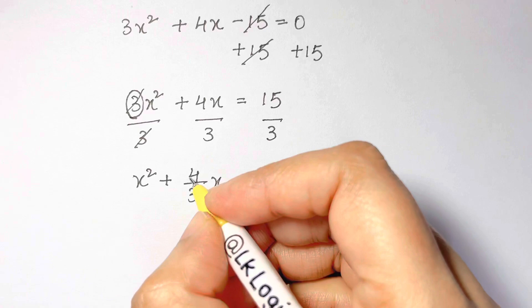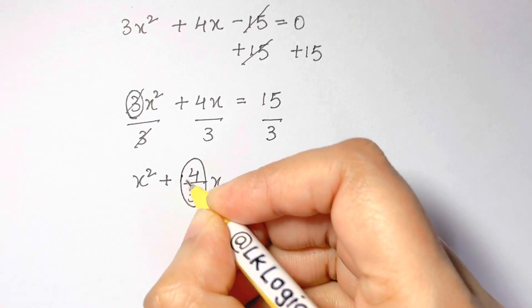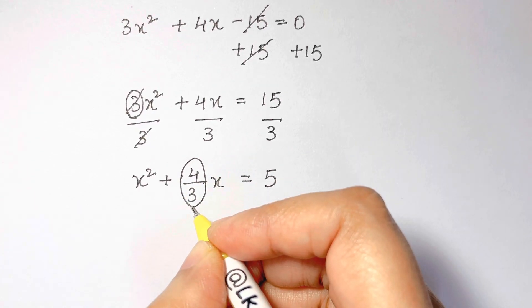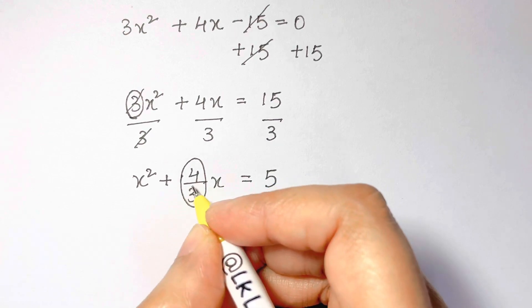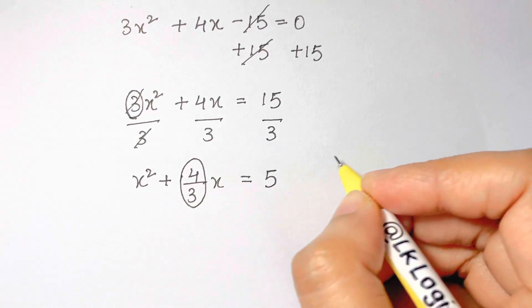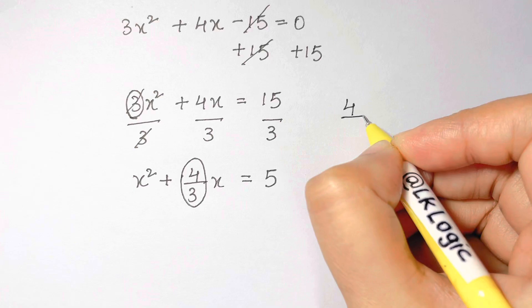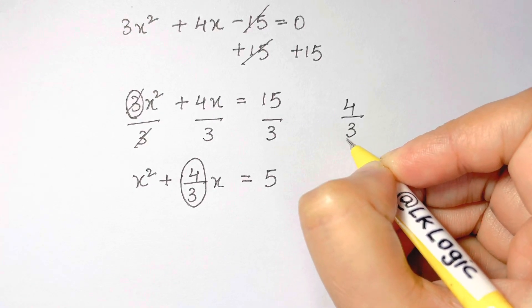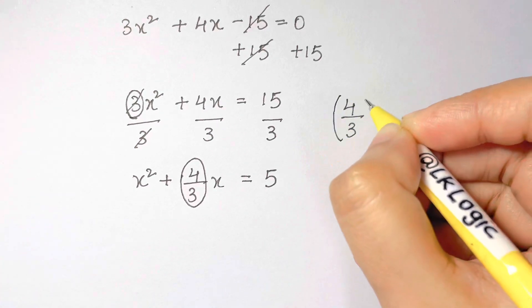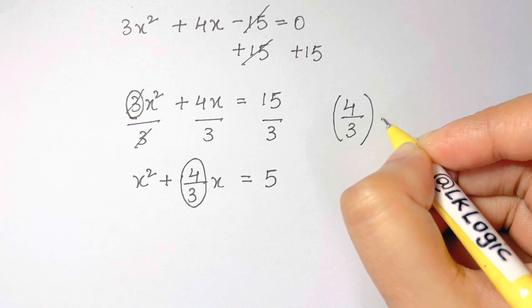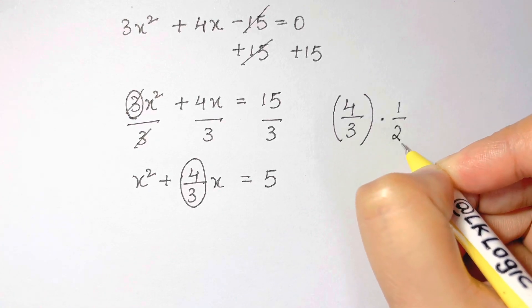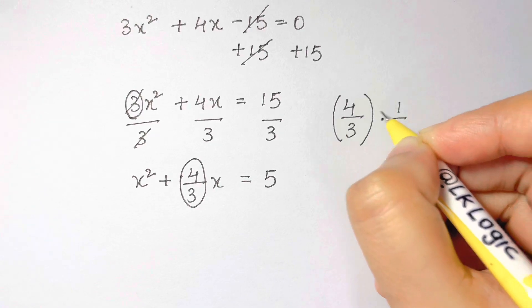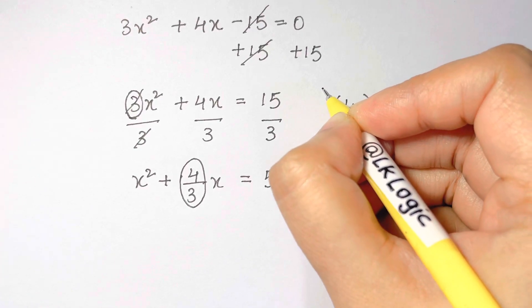Next step, I want you to look at the coefficient of x, only 4/3 here. Just disregard this sign. I want you to write down somewhere here, and now I want you to take the half of this one. Taking the half of this number is simply multiplying this number by 1/2. So once you do that, that's going to give you what?